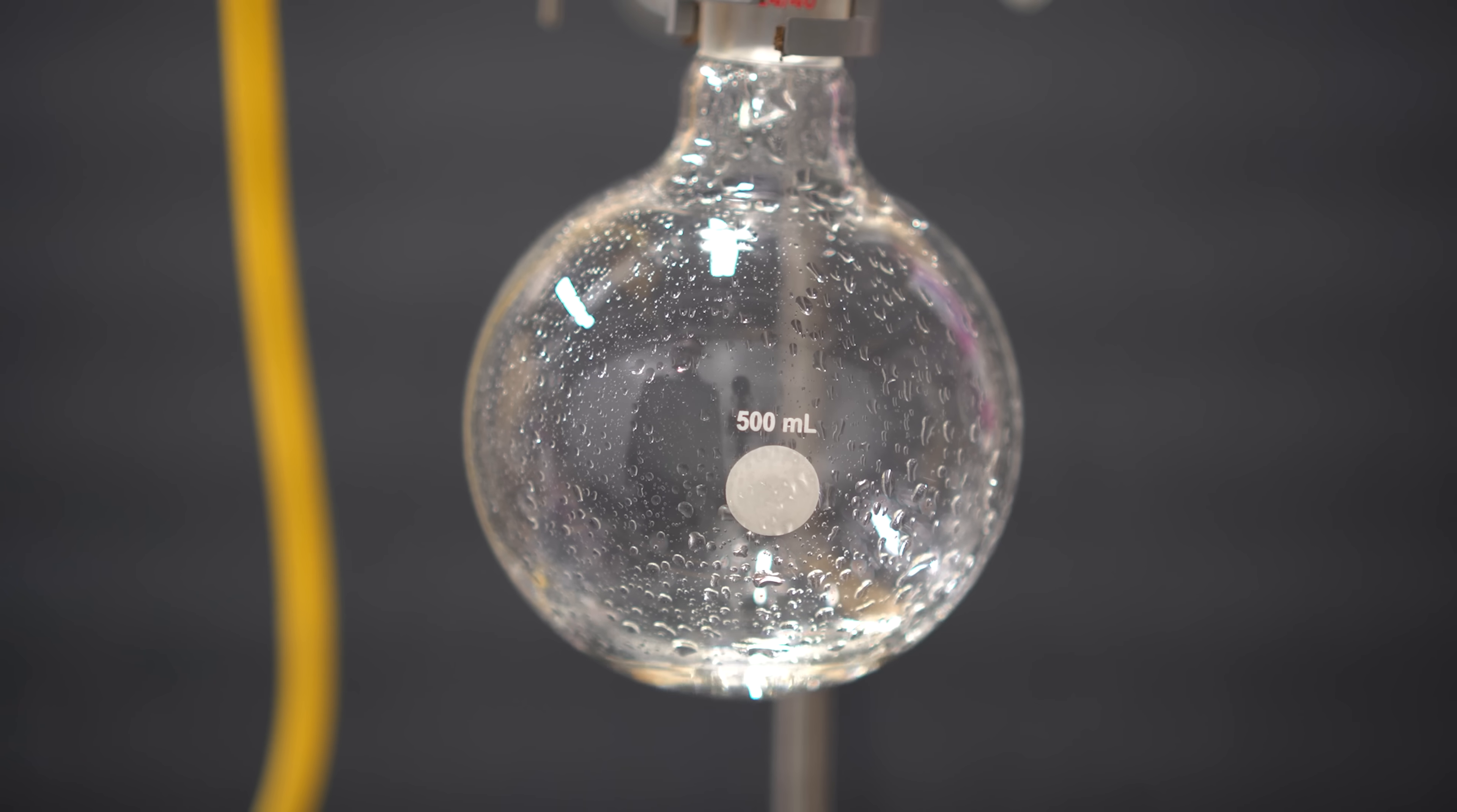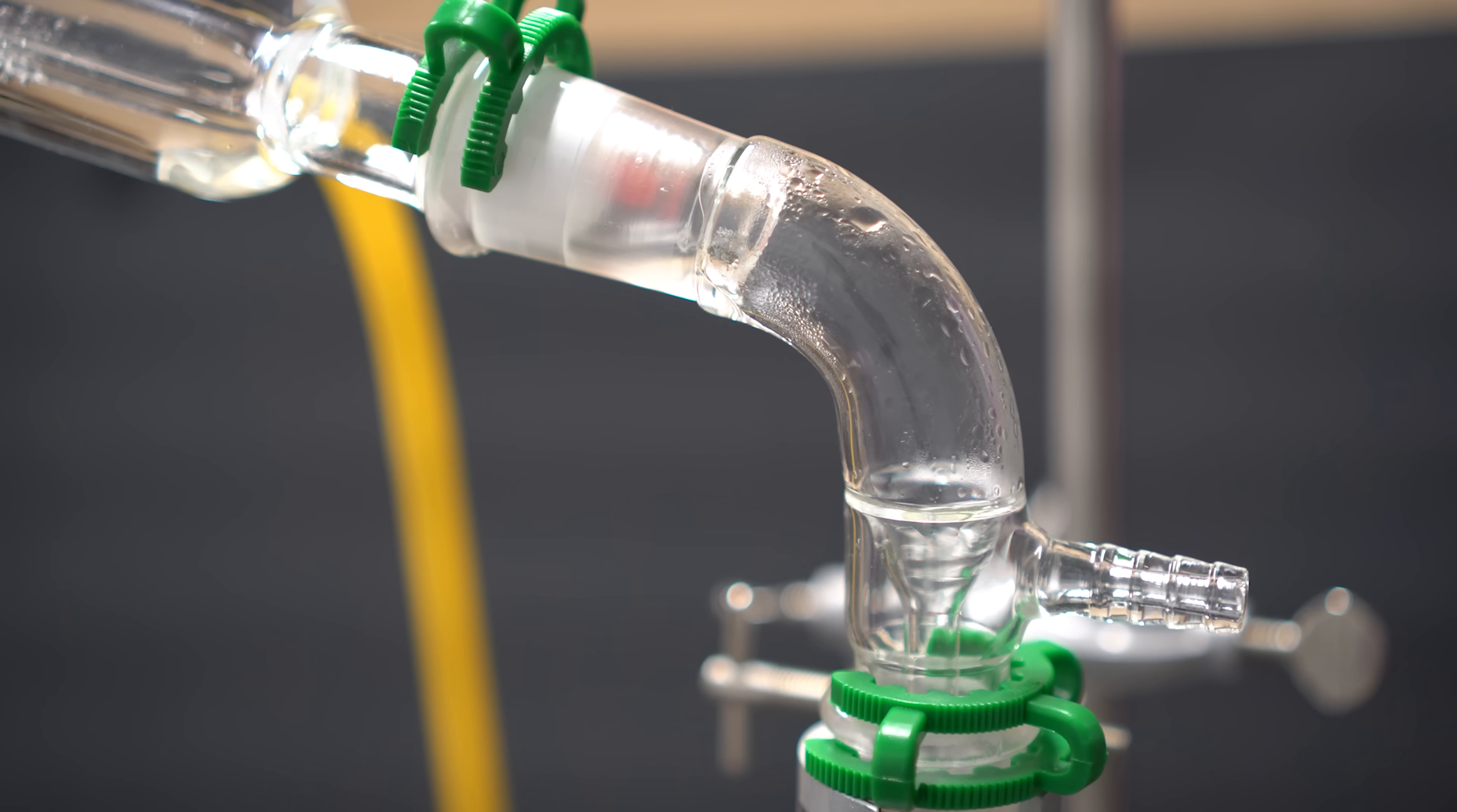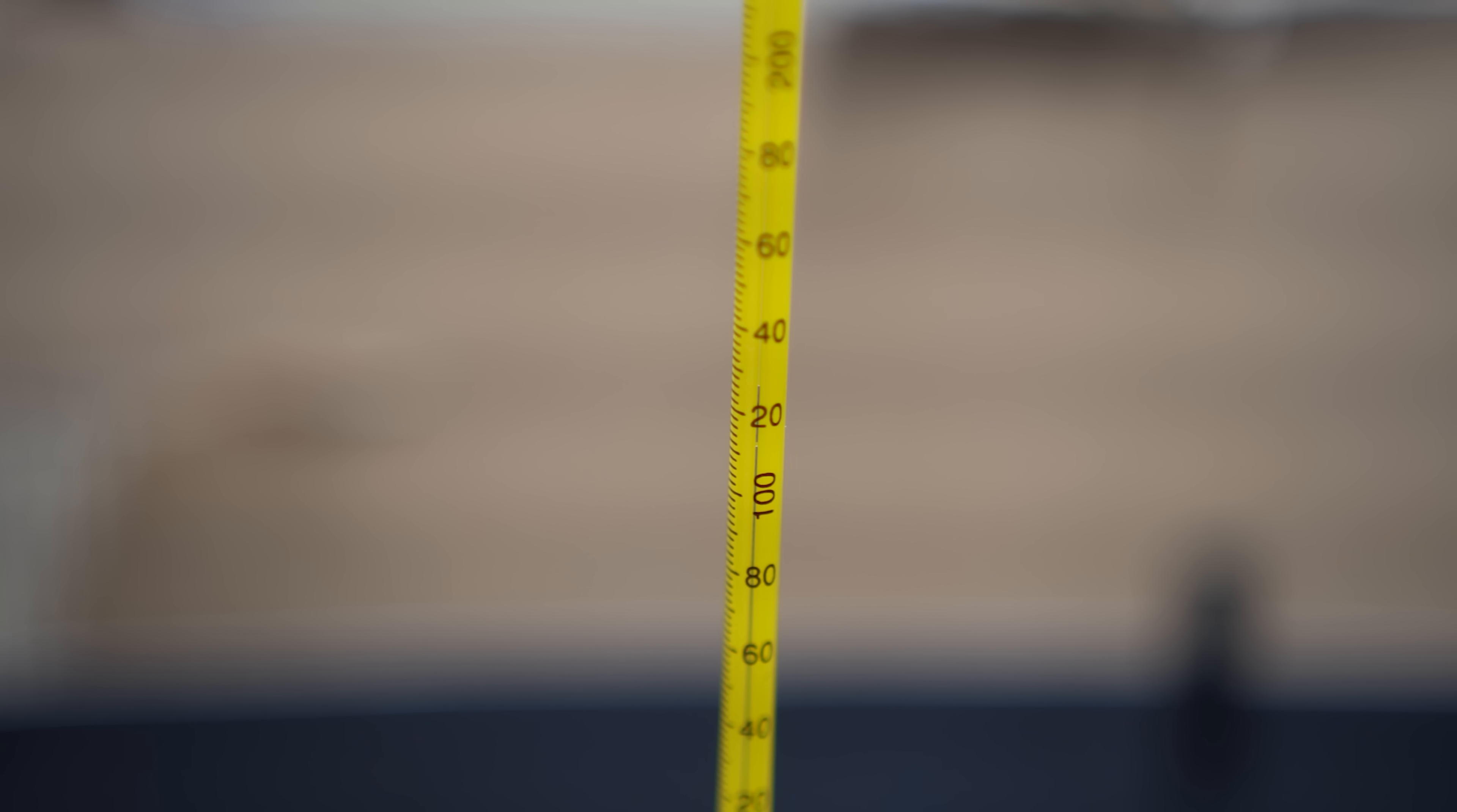Now, everything that we collect should be pretty close to the azeotropic hydrobromic acid, and we're definitely going to keep this portion. Now, I did not set up a sodium thiosulfate trap for this run, however, I should have. As the solution started to boil down, the elemental bromine that was dissolved in there did start to accumulate and be more concentrated, so that was kind of a worry.